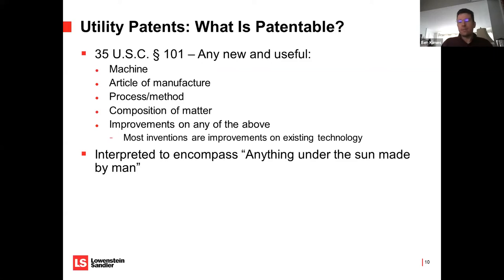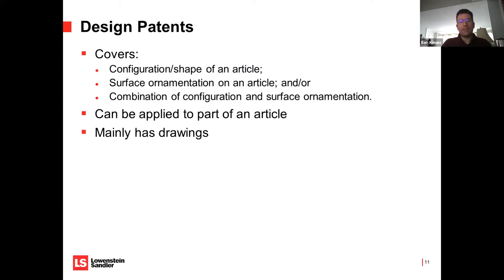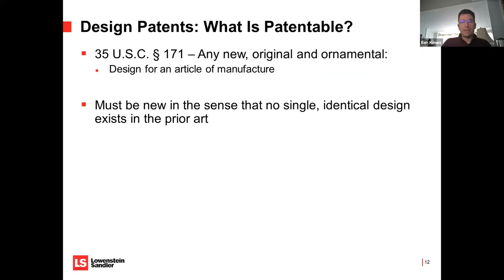In the US, what can be patented is basically anything under the sun made by man. It includes machines, articles of manufacture, processes, methods, compositions of matter, and improvements to any of the above. Most patents are not some profoundly different thing — generally it's just a small incremental improvement on what's been done before. For design patents, they cover a configuration or shape of an article, surface ornamentation, or a combination of those two things.